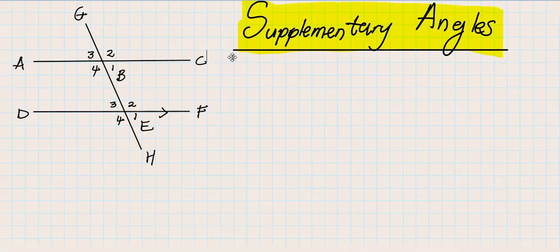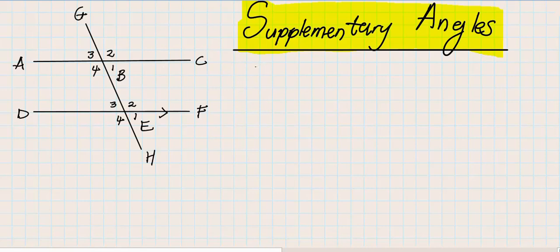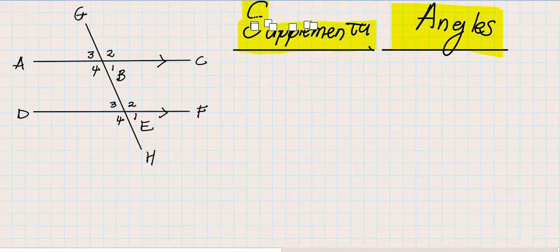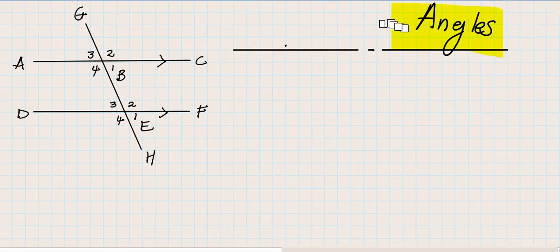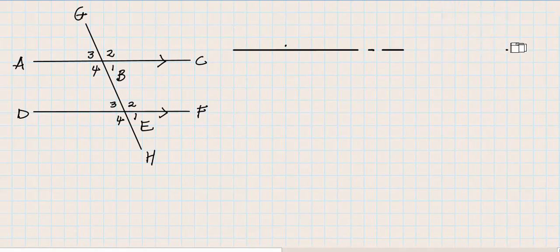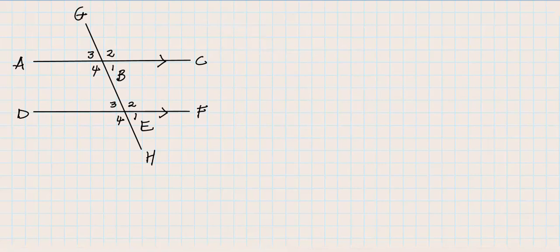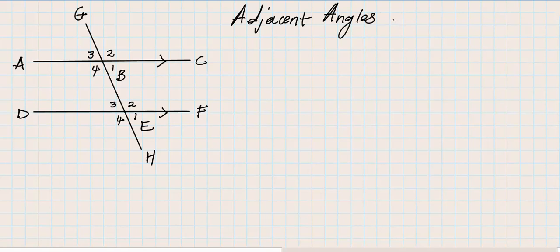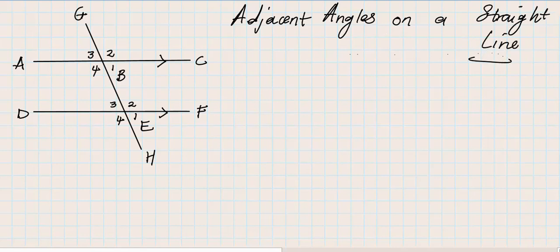We have straight lines GH, AC, and DF. These straight lines are crossed by a transversal line, and we have parallel lines in this diagram. When we talk about adjacent angles on a straight line, let me remove this so that it makes more sense. So in this case when you talk about adjacent angles on a straight line, we are talking about the following.